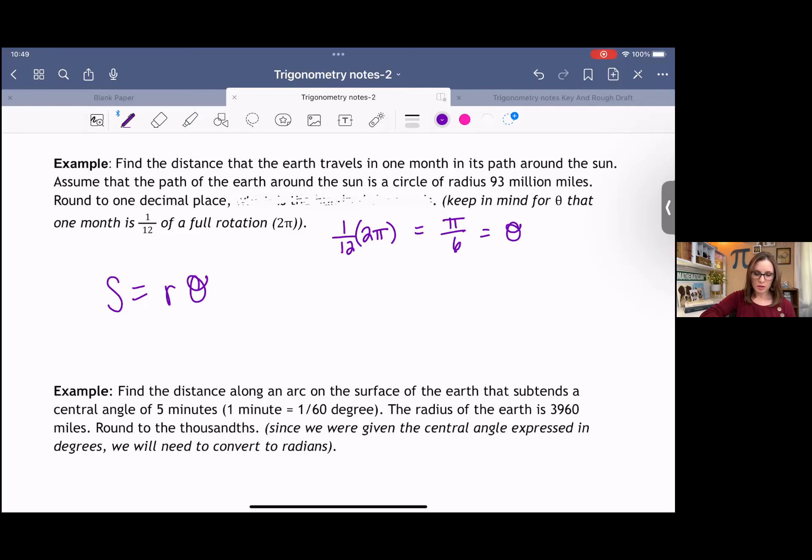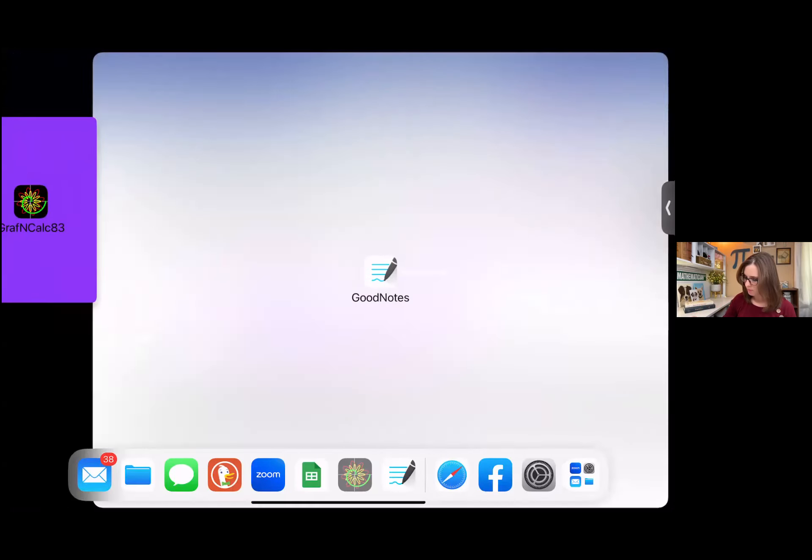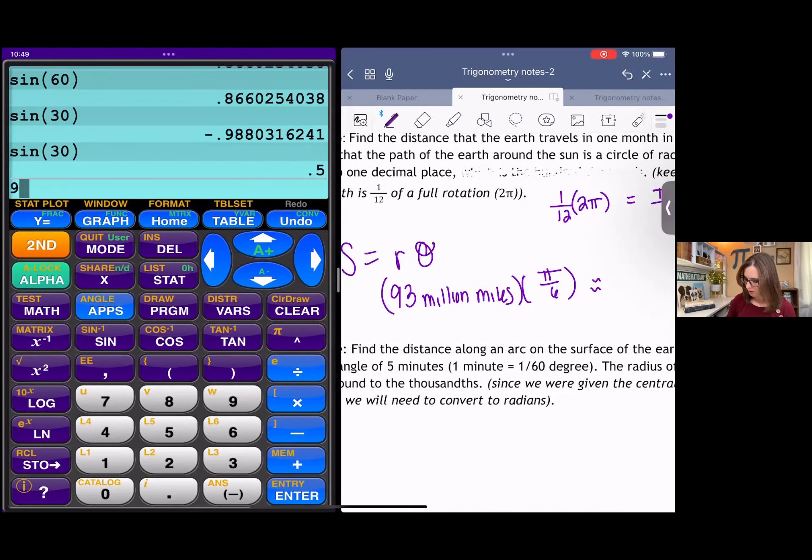Our formula says s equals r times theta. It gives us a radius of 93 million miles. I'm just going to say 93 for now. I'll just do 93 million miles times theta pi over six. And then it does say to round to one decimal. So we can just type this in the calculator. I'm going to do approximately, pull this calculator up.